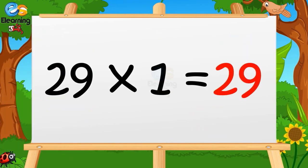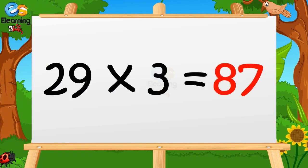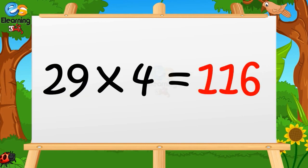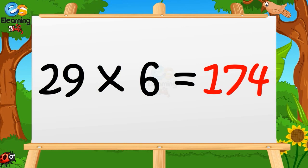29 ones are 29. 29 twos are 58. 29 threes are 87. 29 fours are 116. 29 fives are 145.